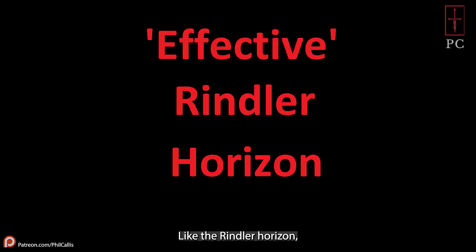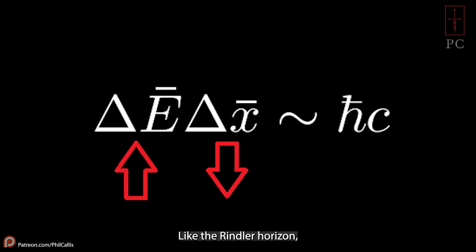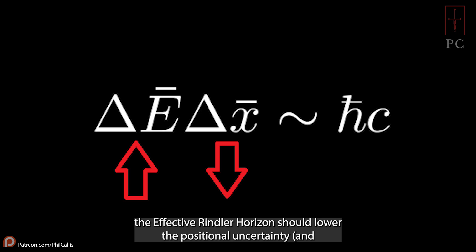Let's call this limited scope the effective Rindler horizon. Like the Rindler horizon, this effective Rindler horizon should lower the positional uncertainty and raise the uncertainty of momentum of the quantum system.